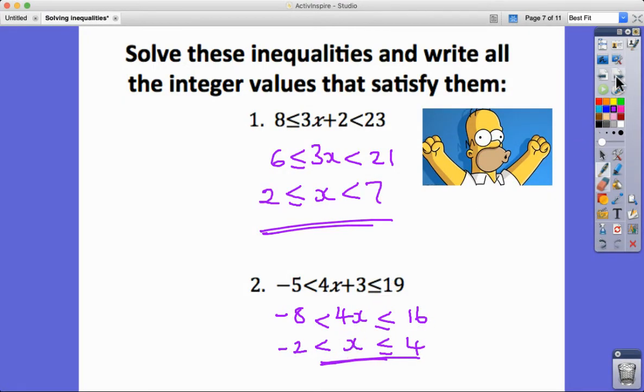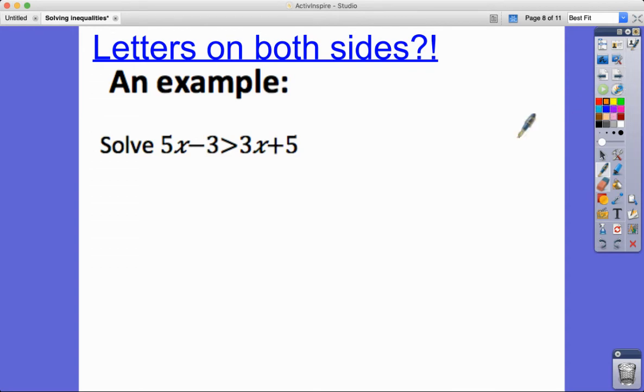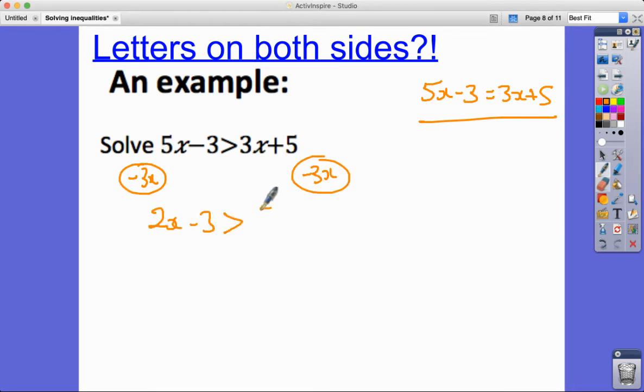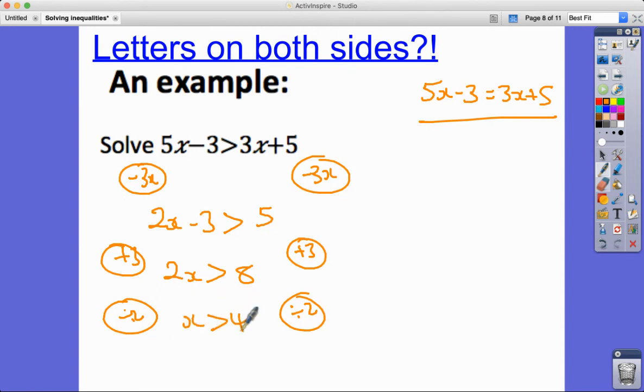Next, letters on both sides, how about this? Just like I'm sure you don't have any problem knowing what to do in this case, it's the same thing. What I'm going to do is aim to move the smallest x term first, so I'm going to subtract, in this case because it's positive, I'm going to subtract 3x, so I get 2x minus 3 greater than 5. I'm then going to add 3 to both sides, so we get 2x greater than 8, and then divide by 2, and we get an answer of x is greater than 4.